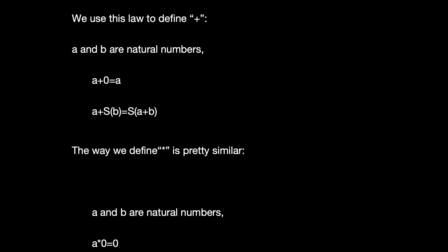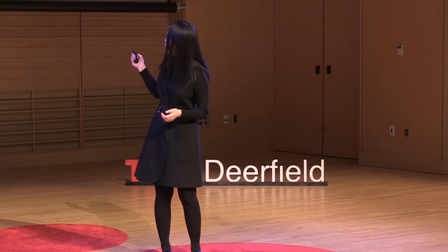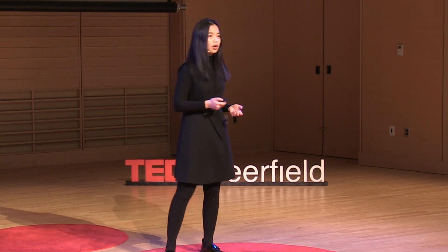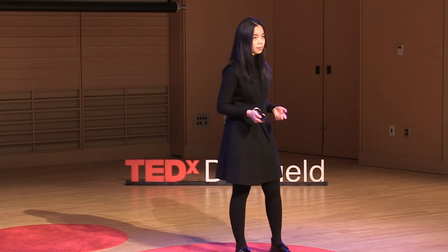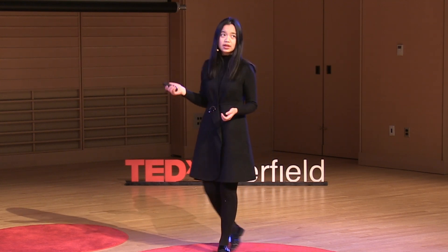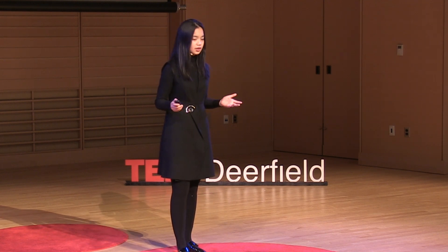The definition for multiplication is similar to that of addition. For natural numbers A and B, A times 0 equals 0, and A times S(B) equals A plus (A times B). After defining all of these terms — we define 1, we define plus, we define equals, we define 2 — we can finally prove why 1 plus 1 equals 2.